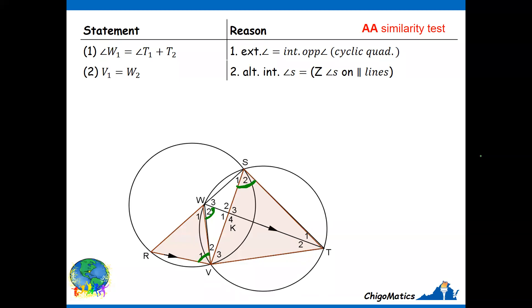As you can see, those three angles are equal. W2 is equal to S2 because these are angles obtained by the same chord. Then by transitive property of equality, since V1 equals W2 and S2 equals W2, then V1 and S2 should be the same.